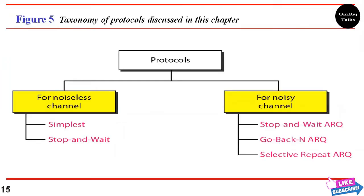Data link layer protocols are divided into two categories: the first is noiseless channel and the second is noisy channel. Noisy channels use special frames called acknowledgement (ACK) and negative acknowledgement (NAK). In real life networks, data link protocols are implemented as bi-directional data flow. Flow and error control information such as ACKs and NAKs is included in data frames using a technique called piggybacking.